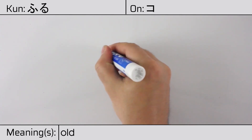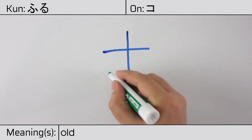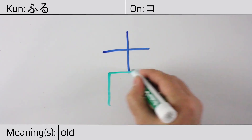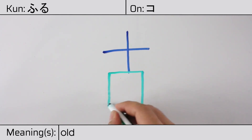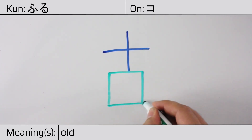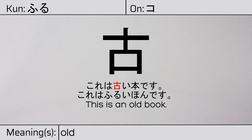You can remember this kanji by the following hint: many words spoken in the past. Our example sentence is: Kore wa furui hon desu — This is an old book.